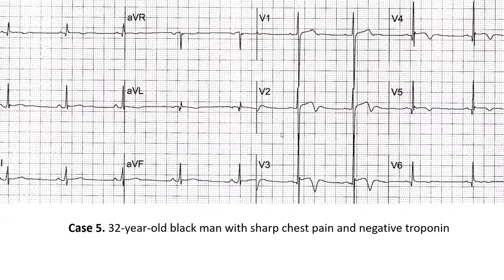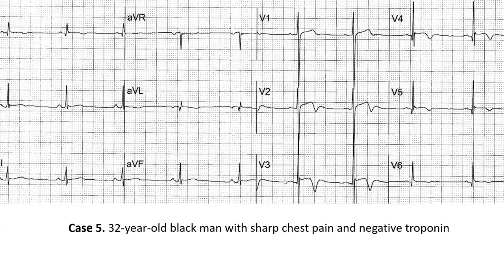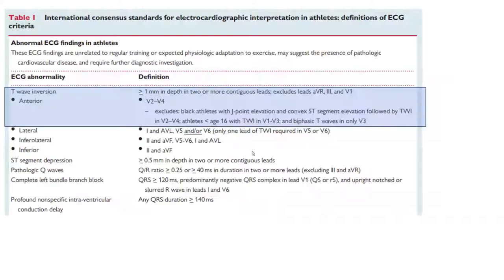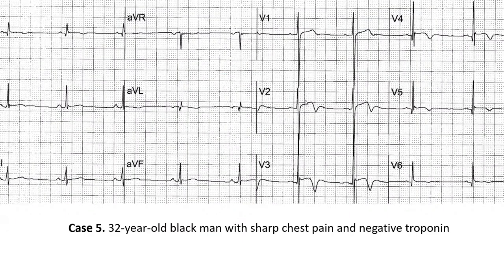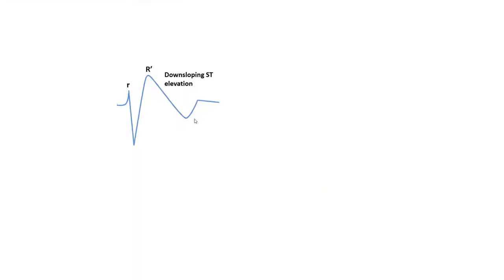Another differential to consider, especially in a young athlete at pre-participation screening, is Brugada. The shape doesn't fit here — Brugada ST elevation would be downsloping, a coved ST elevation, not this shape. So the differentials are: early repolarization variant, HCM, ARVD, Wellens, and Brugada.